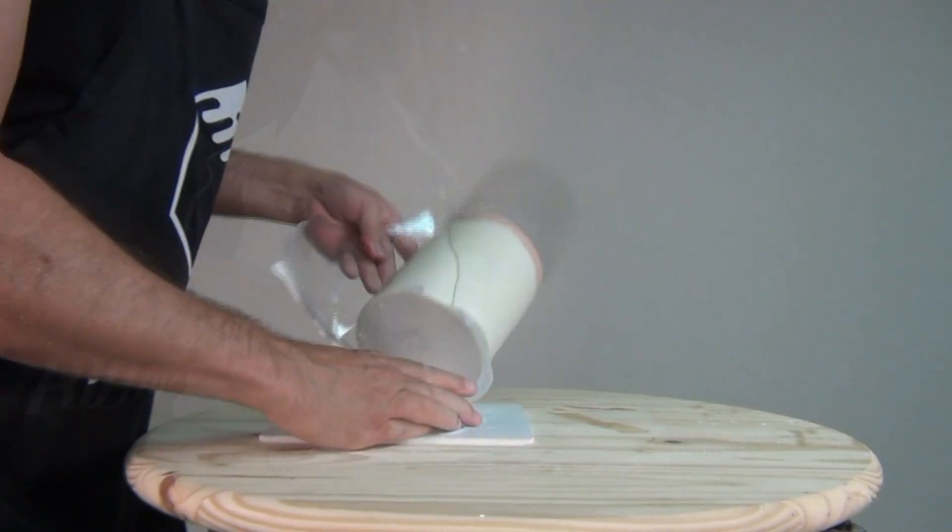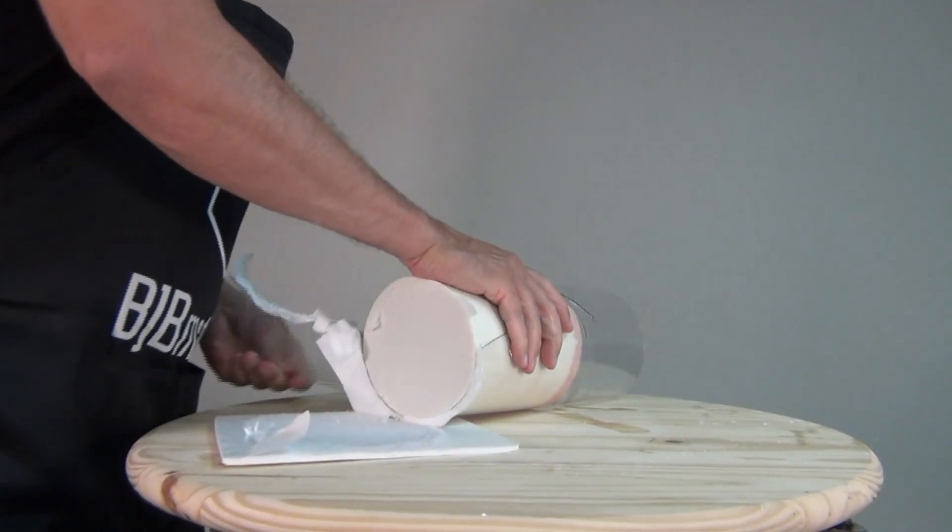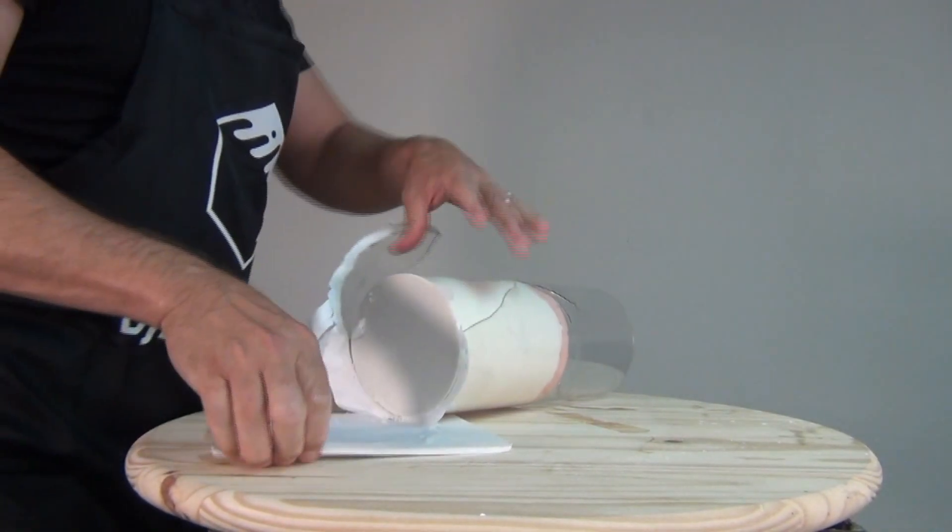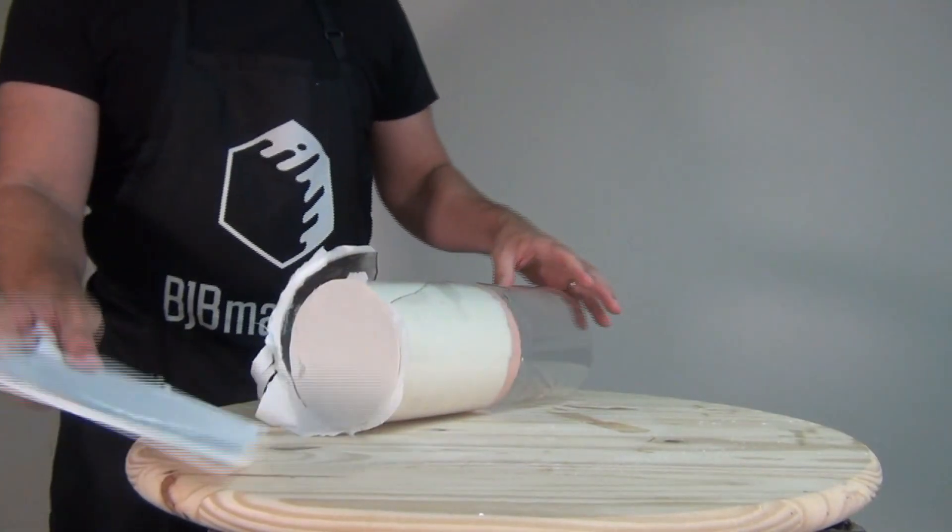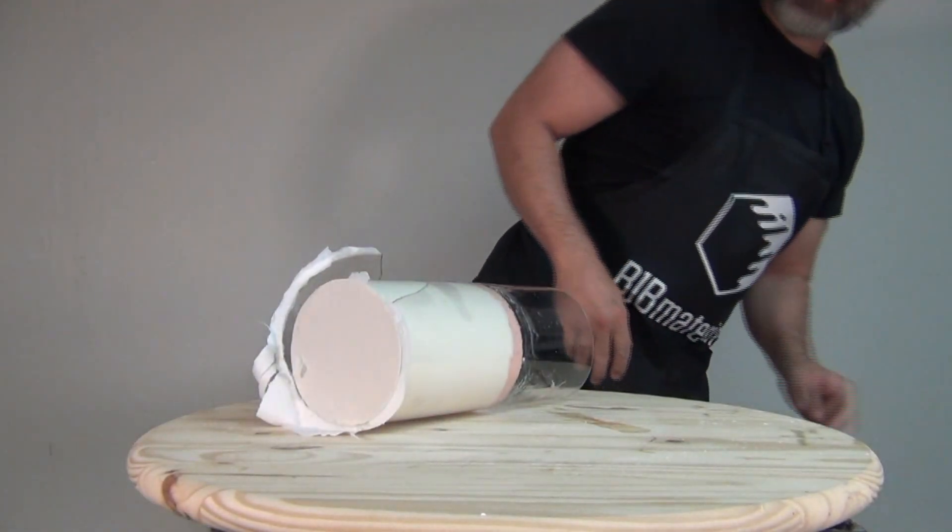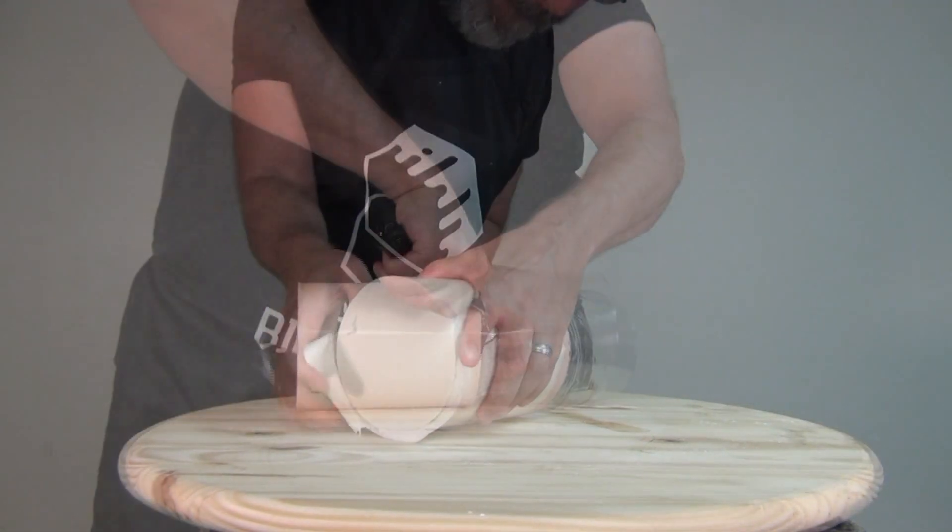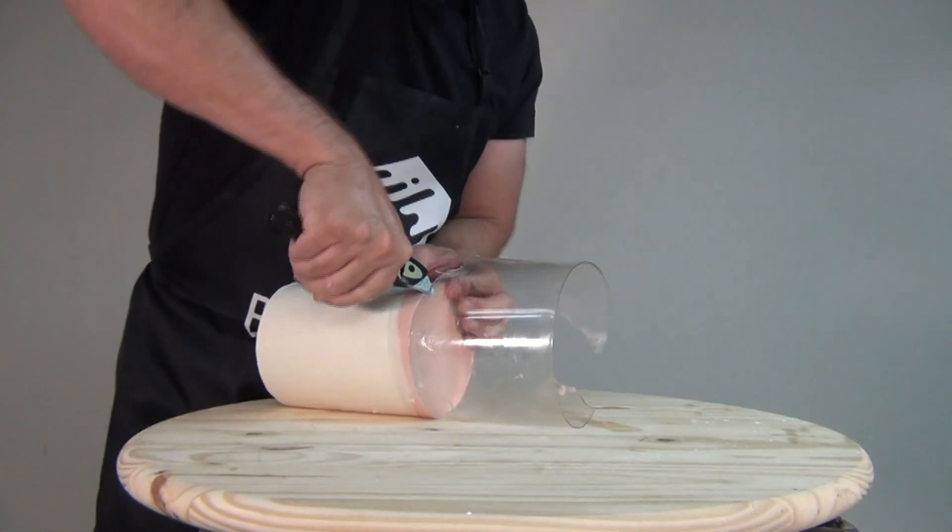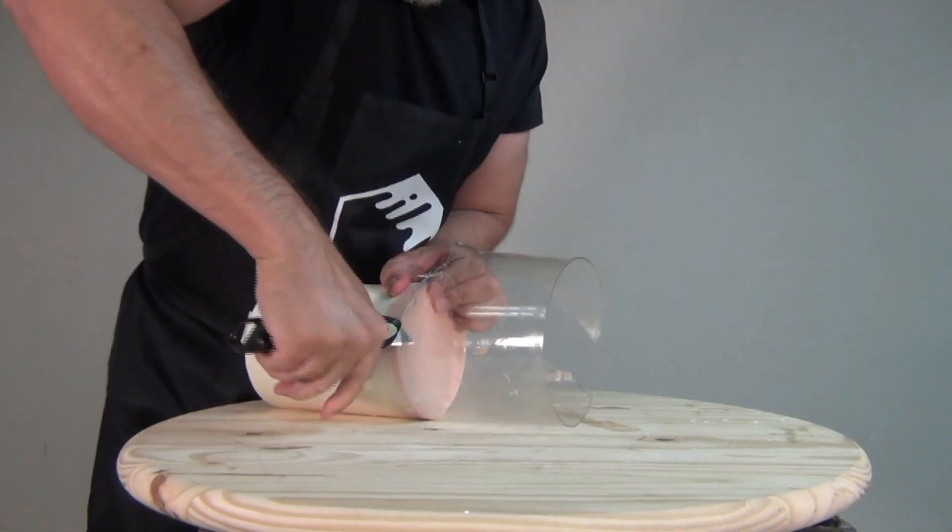And now of course you see here where I would have been much better off using high temp paste wax and a brush, of course, instead of my finger, instead of the Vaseline. Because the Vaseline, when that resin exothermed or went through that heat cycle, it just pushed that petroleum jelly right out of the way and grabbed onto that tube underneath. So lesson learned.